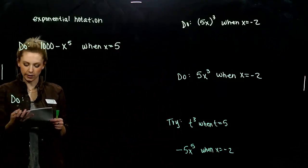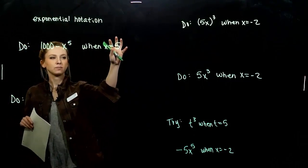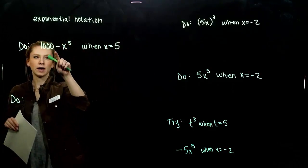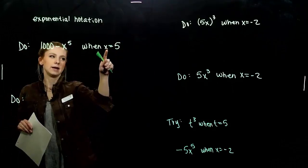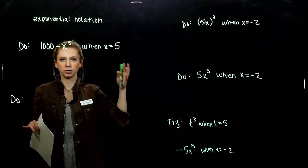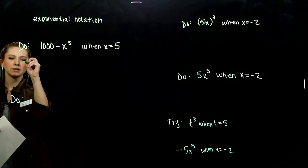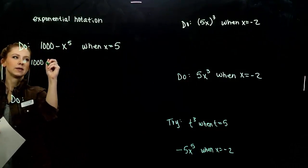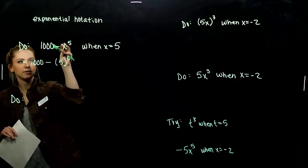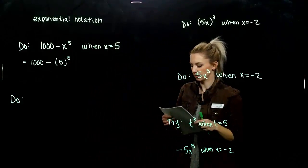We want to evaluate a few different expressions given a value for our variable. We want to evaluate 1000 minus x to the fifth when x is equal to 5. It behaves just like normal if it was a 1. We just plug it in, but now we have to evaluate that exponent first. We've got 1000 minus 5 to the fifth. Wherever x is, put parentheses around it so you don't mistake.